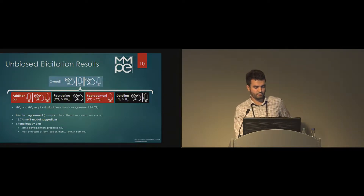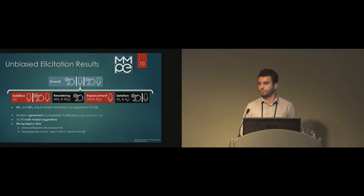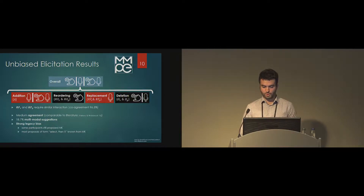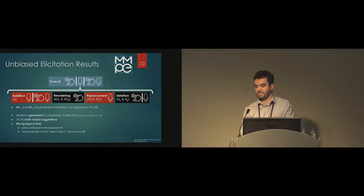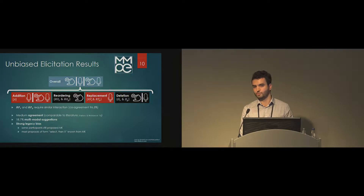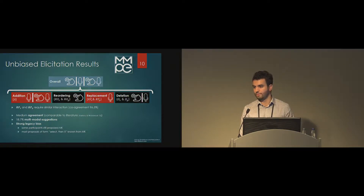Clustering results by task: for the addition task, speech or touch combined with speech was mostly proposed; for reordering, it was mostly touch and participants were really enthusiastic about that; for replacement, they wanted to use speech; and for deletions, either of the two. We also see that the co-agreement rate — a measure in elicitation studies — was really high for the replacing tasks, suggesting those two could actually be seen as a single interaction. In general, we found medium agreement and quite some multimodal suggestions, but a strong legacy bias — not only in that mouse and keyboard were still proposed, but also that all proposals were of the form 'select something and then do something with it,' which is the mouse-and-keyboard paradigm and would not be necessary in other modalities.